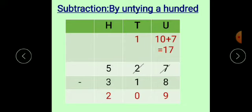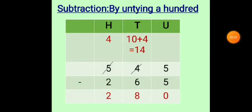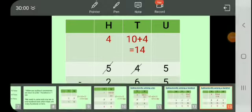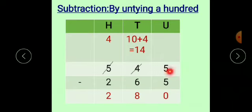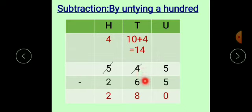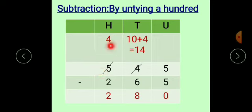Now, subtraction by untying a 100. See here: 545 minus 265. We always start subtraction from the units place. Here 5 minus 5, we get 0, so no need to borrow from the tens place. Now move towards the tens place. Here is the number 4, and we cannot subtract 6 from 4. That's why we have to borrow from the hundreds place. This 5 — if we take 100 from it, then here are 4. So cut this 5 and write 4. Now, 100 means 10 tens, so write 10 tens plus this 4 tens, giving us 14 tens.